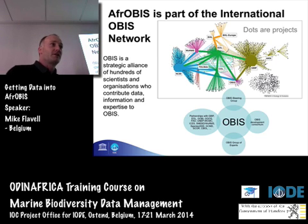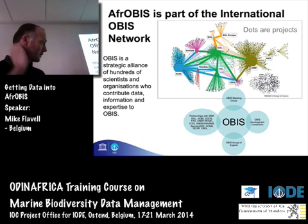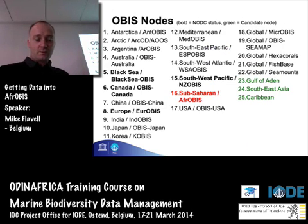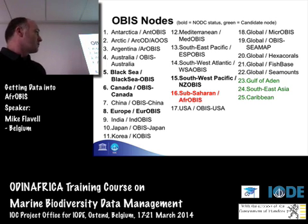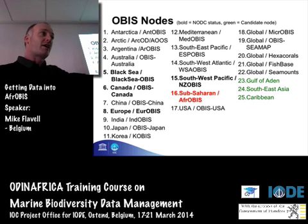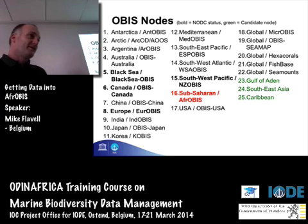Afro-OBIS isn't the only node — it's part of a global network of nodes, and OBIS is the strategic alliance of all these institutions, networks, and data providers. We have a number of OBIS nodes from all over the world. Afro-OBIS is really only supposed to represent sub-Saharan Africa, but at the moment it's representing the whole continent. New nodes are welcome to propose joining the network.